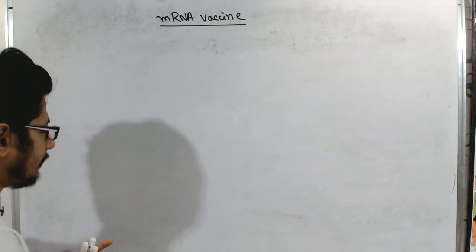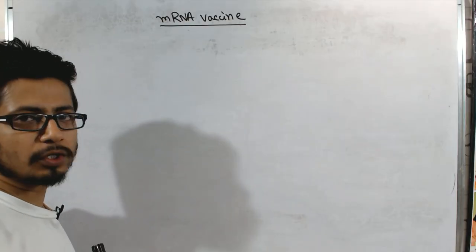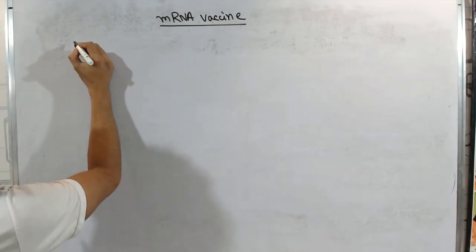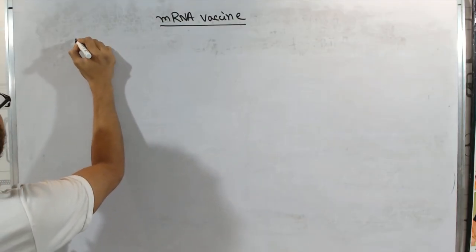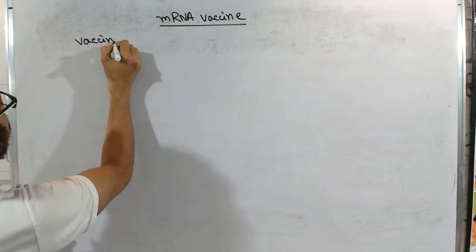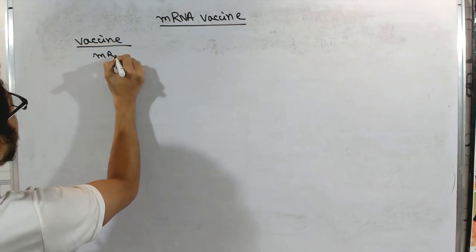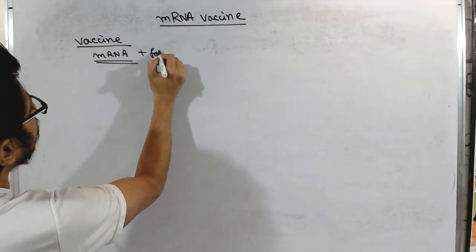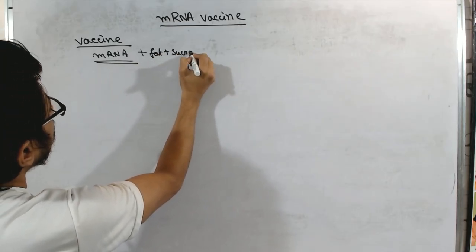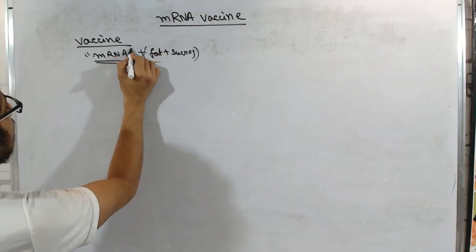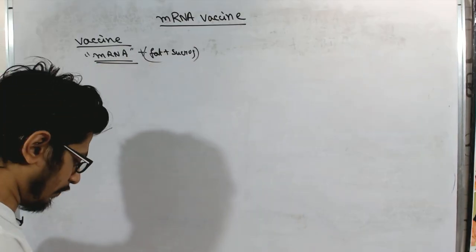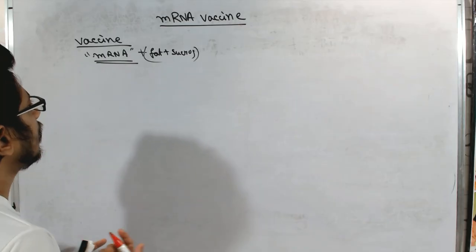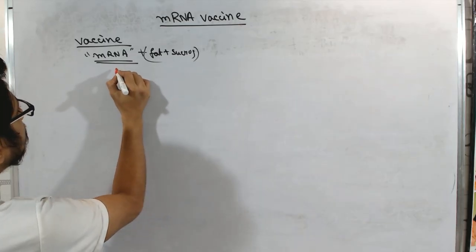So in this case of mRNA vaccine, be it Moderna vaccine or Johnson & Johnson vaccine or any other mRNA vaccine, the process is simple. The vaccine itself contains mRNA as an active ingredient. Along with mRNA, there are different fat molecules, sucrose and many other things, but actually it is mRNA which we are looking for, which will actually instigate our immune system to produce antibodies. So this mRNA is present there.